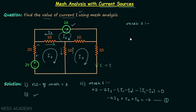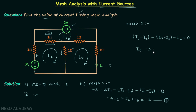For mesh number two, starting from this point: minus (I2 − I1) times 1, then minus (I2 − I3) times 1, then minus I2 times 1 equals 0. Simplifying, we get: I1 − 3·I2 + I3 = 0. Let's call this equation number two.